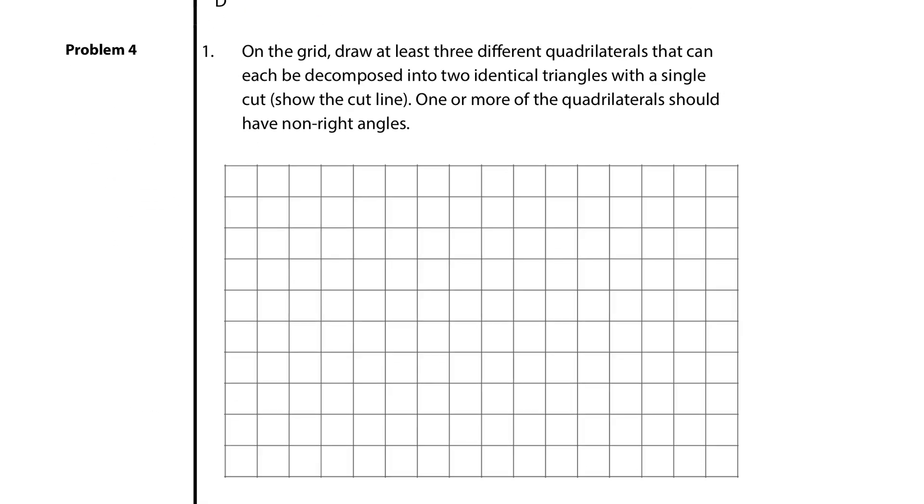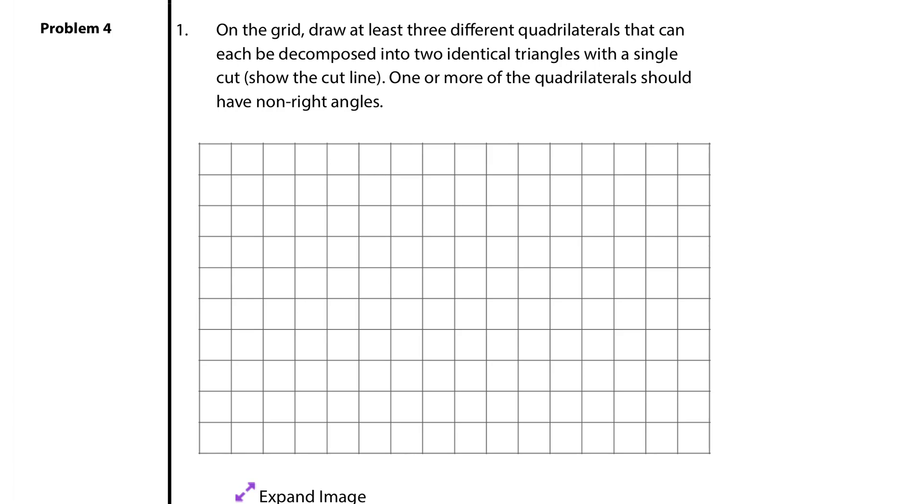Problem 4. On the grid, draw at least three different quadrilaterals that can be decomposed into two identical triangles with a single cut. Show the cut line. One or more of these quadrilaterals should have non-right angles. Let's start with an easy one. Let's start with a rectangle. Rectangle, certainly quadrilateral. And then to show my cut line, let's just show it right there. And that will give me two identical triangles.